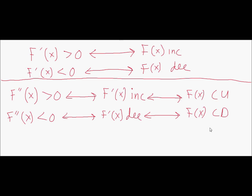So regardless of what you're asked to find, they all mean the same thing. If you're asked where f prime is increasing, find where f double prime is greater than zero. If f prime is decreasing, you know f is concave down and f double prime is negative. If f prime is positive, you know f is increasing. If f is decreasing, you know f prime is negative. They all mean the same exact thing — if you know one, you've got the other.